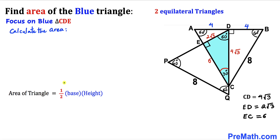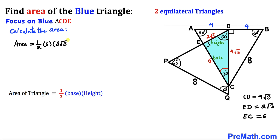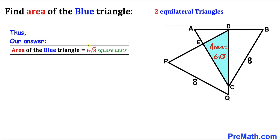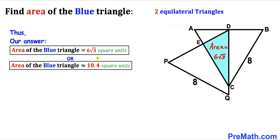For the final step, we calculate the area of the blue triangle using Area = (1/2) × base × height. Our base EC is 6 and our height ED is 2√3, so the area = (1/2) × 6 × 2√3 = 6√3 square units, which is approximately 10.4 square units.